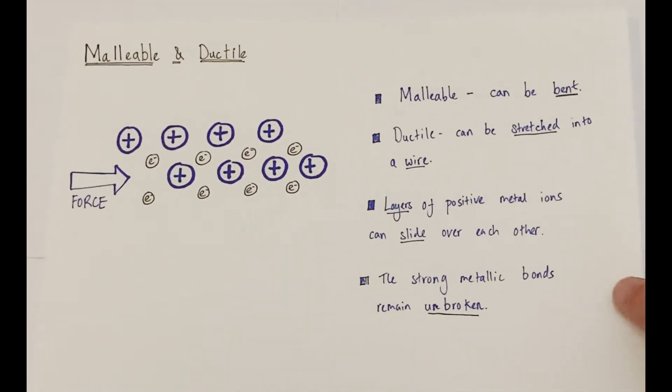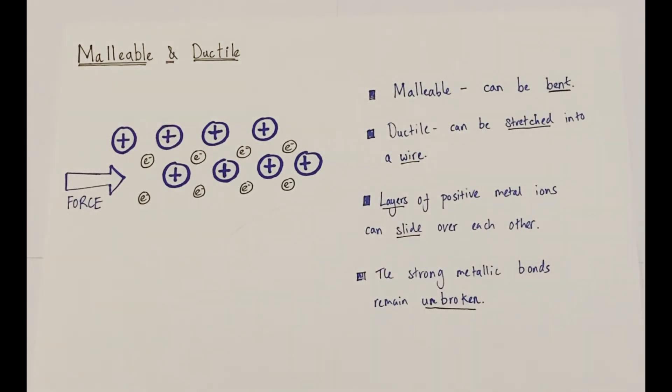The final property of metals I want to focus on is that they are described as malleable and ductile. So what do we mean by malleable and ductile? Well, malleable means that they can be molded and can be bent into specific shapes without breaking, without snapping. And ductile means you can stretch metals into wires.